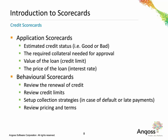Application scorecards, as the name implies, are developed to estimate the credit of good or bad or intermediate of new applications to a credit product, whether that product is a credit card, a loan, or any other goods or services provided on credit. The things we estimate for application scorecards are whether or not to accept the customer, by estimating whether this application or account would end up being good or bad, the amount of credit we offer — the credit limit — and, of course, the price of the loan, the interest rate, if we are applying variable interest rates.